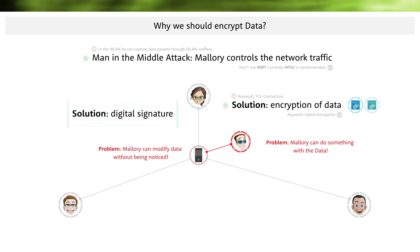The solution is called Digital Signature. Here, the actual data is not encrypted. Instead, a hash value is calculated over the data and this is encrypted by Alice. A digital signature ensures the integrity of the mail. I created the video 'Integrity and Digital Signature' in this course where I explain how this works exactly.